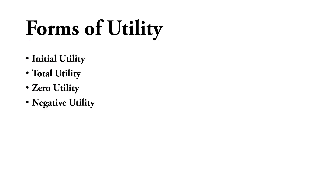Forms of Utility: the first type is initial utility. For example, if there are chapatis made at home and you are hungry, and you eat the first chapati — the satisfaction you get from eating the first chapati is called initial utility.